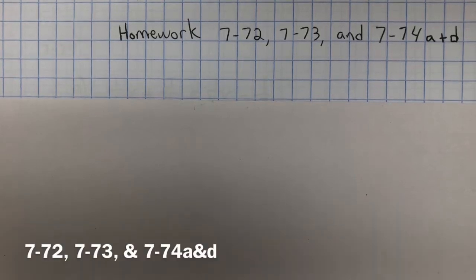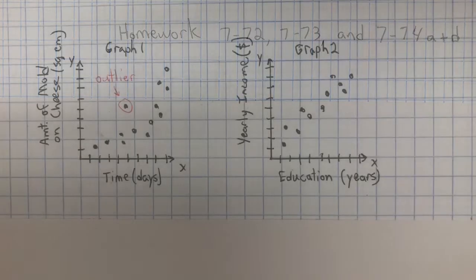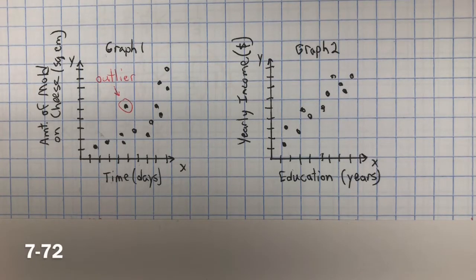This is the homework for 7-72, 73, and 74 A and D. In problem 7-72, you need to describe the associations in the two graphs.